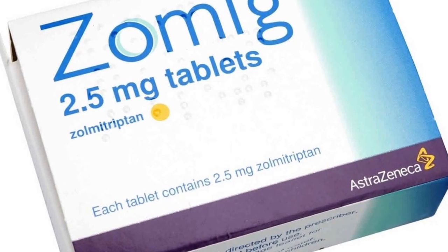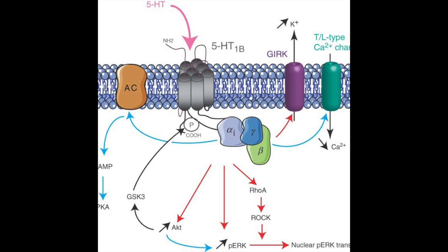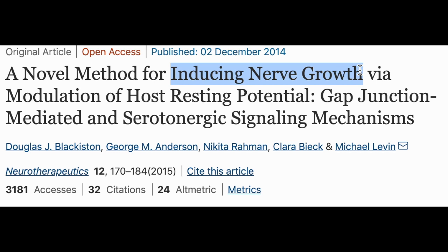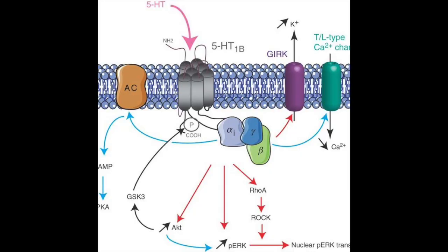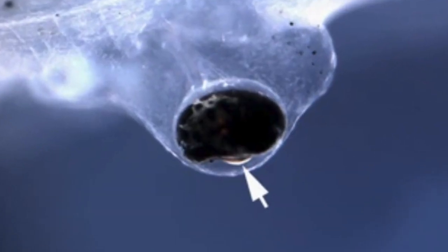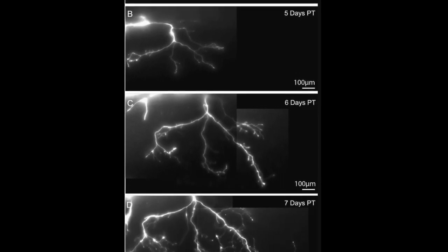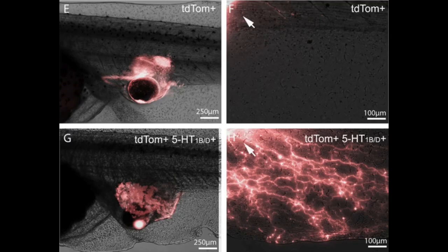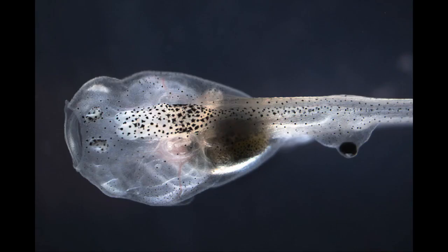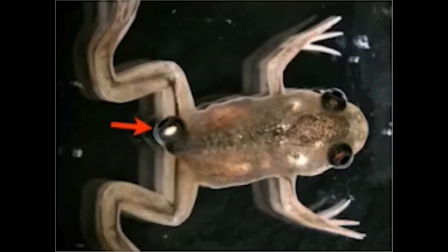It's still blind. But since it probably has a headache now, let's give it some migraine medicine. This activated the 5-HT1B pathway. We do this because it has been previously shown to induce nerve growth by modulating the host resting potential — in other words, altering the bioelectricity. And now that we've activated this pathway in the grafted eye of the tadpole, we see nerve growth. Over time you can see this grow and attach to the rest of the nervous system, and now our blind tadpole can see out of its grafted eye. We can also do this to frogs on their butt and on their back.